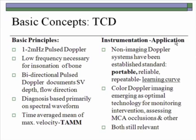The basic concepts of TCD: you use a 1 to 2 megahertz pulsed Doppler. Low frequency is necessary for insonation through the bone. A bidirectional pulsed Doppler is necessary to discriminate flow direction and sample volume depth. The diagnosis is based primarily on the spectral waveform using the time average mean of the maximum velocity. The instrumentation for transcranial Doppler really applies to the application you're using.